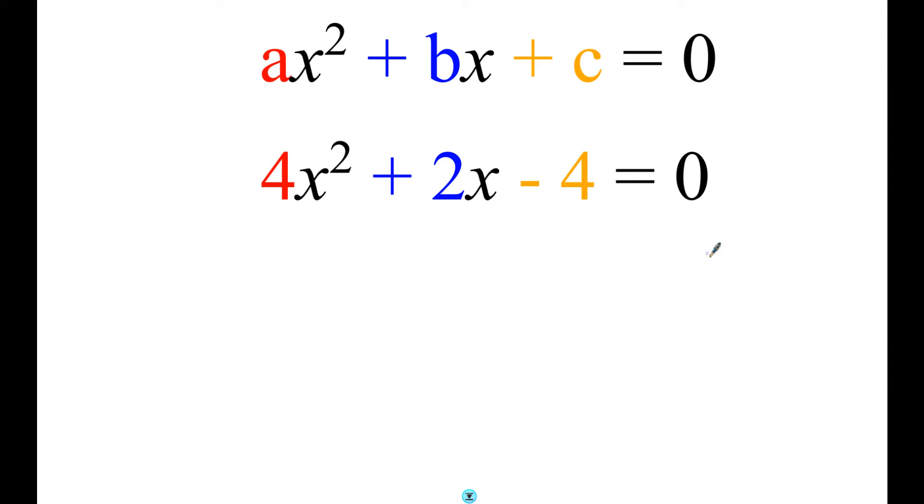In the second example we could write down now that for this particular, this specific quadratic equation, that a equals 4, b equals 2, and c equals minus 4. It's really important that you include the sign each time.